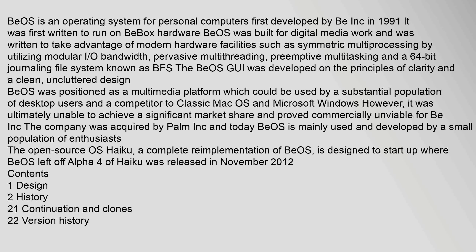BeOS is an operating system for personal computers first developed by Be Inc. in 1991. It was first written to run on BeBox hardware. BeOS was built for digital media work and was written to take advantage of modern hardware facilities such as symmetric multiprocessing by utilizing modular I/O bandwidth, pervasive multithreading, preemptive multitasking, and a 64-bit journaling file system known as BFS. The BeOS GUI was developed on the principles of clarity and a clean, uncluttered design. BeOS was positioned as a multimedia platform which could be used by a substantial population of desktop users and a competitor to classic Mac OS and Microsoft Windows. However, it was ultimately unable to achieve a significant market share and proved commercially unviable for Be Inc.